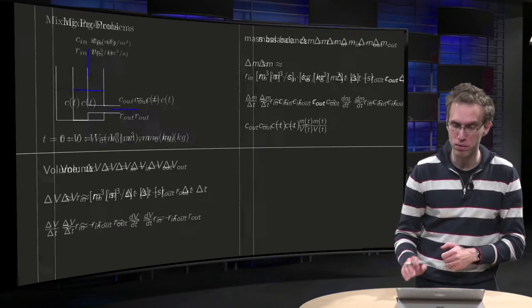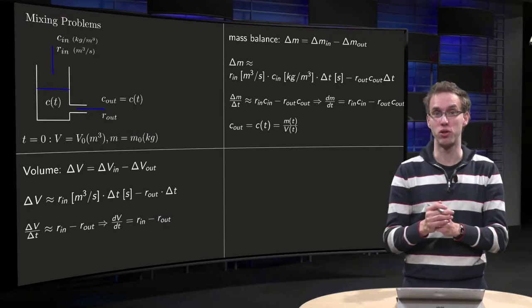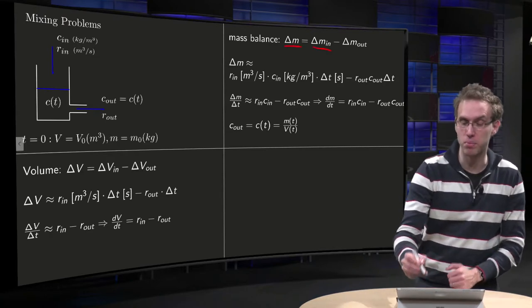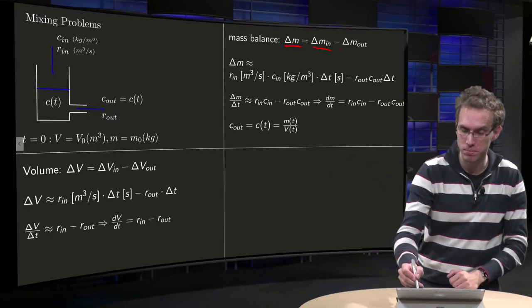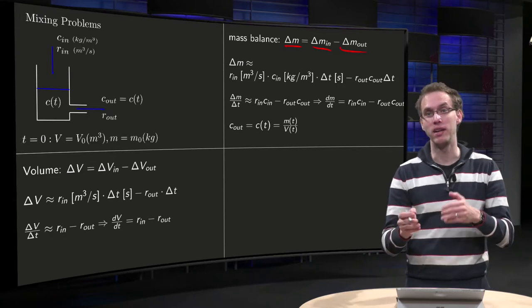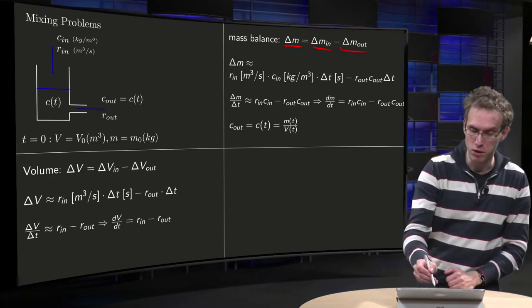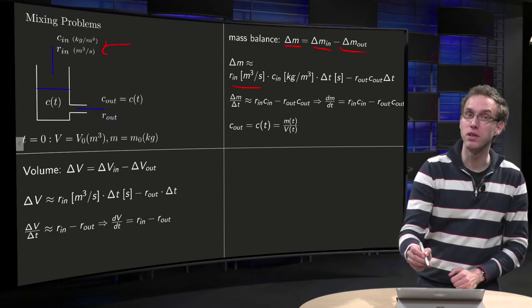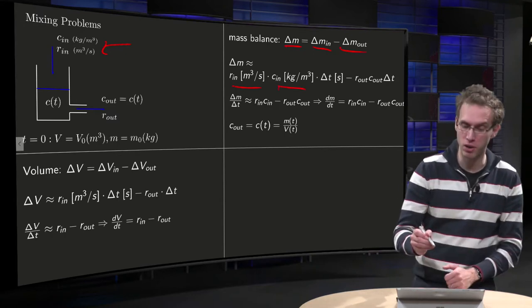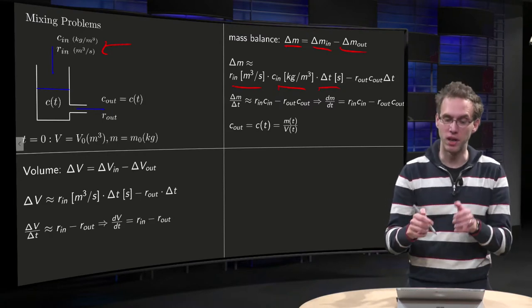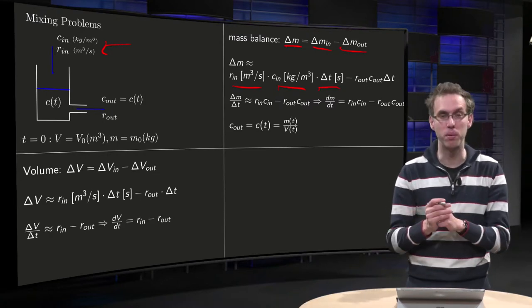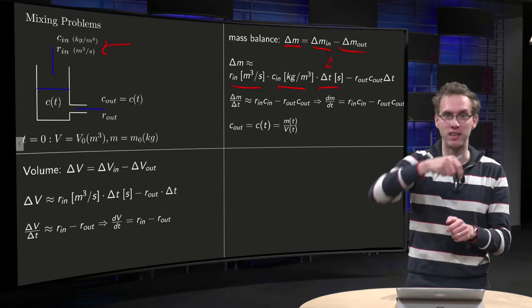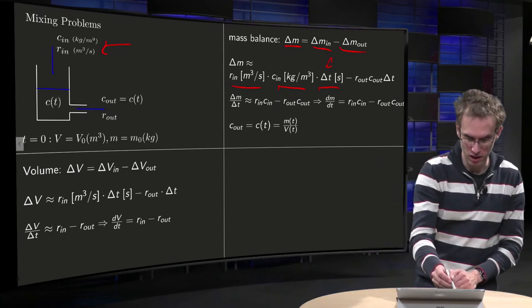Then, next, the balance of the mass. What about the mass of the salt in the tank? Well, something similar. The delta M equals delta M which comes in minus delta M which goes out. And what do we know about delta M in and delta M out? So delta M is approximately equal to what comes in? Well, what comes in comes in at a rate in meter cube per second times a concentration in kilogram per meter cubed times delta T. So what you get here is meter cube per second times kilogram per meter cubed equals kilogram per second times those seconds gives you a kilogram. That's what goes in the tank.